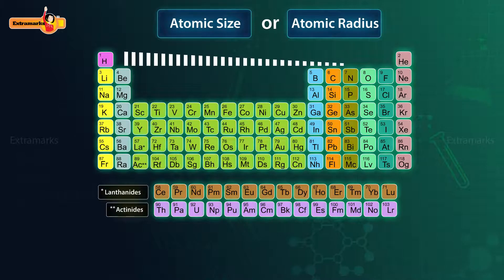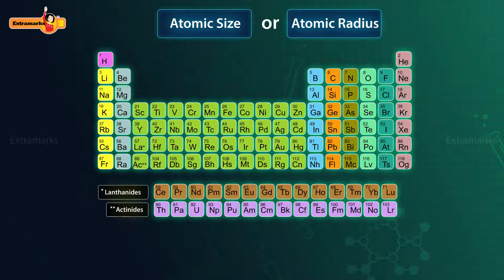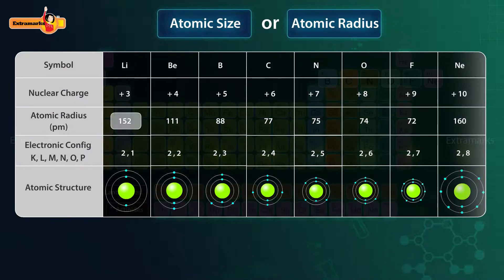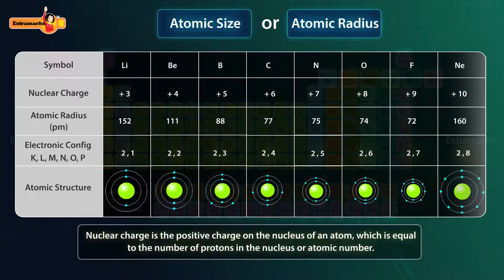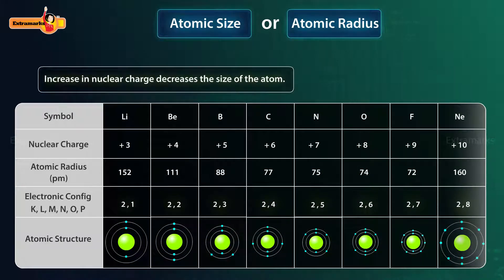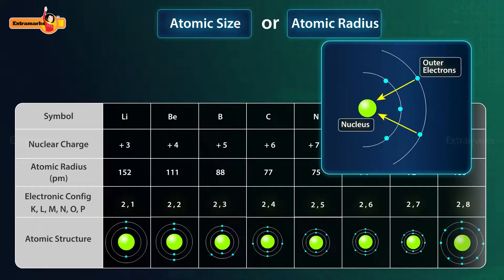In a period, the atomic size decreases from left to right. Consider the elements of the second period — lithium has the largest atomic size while fluorine has the smallest. This is because the number of electronic shells remains the same, but the magnitude of nuclear charge increases due to the increase in atomic number. Nuclear charge is the positive charge on the nucleus, equal to the number of protons, i.e., the atomic number. An increase in nuclear charge decreases the size of the atom, because the electrons are attracted towards the nucleus with greater force, bringing the outermost shell closer to the nucleus. Hence, the atomic size decreases.